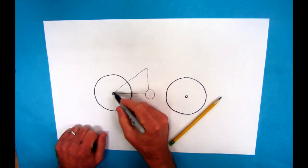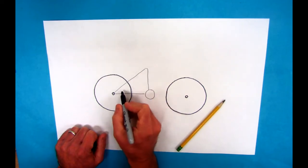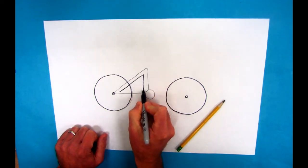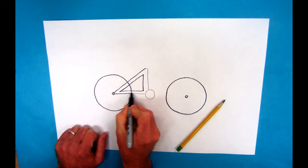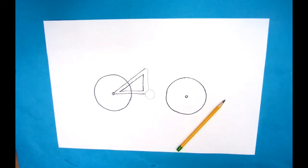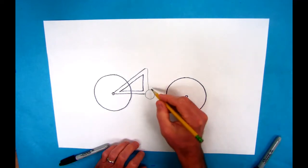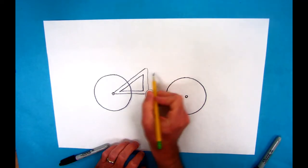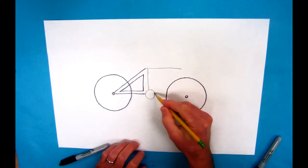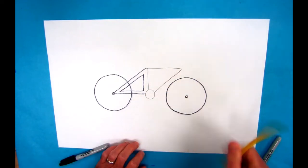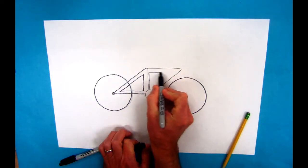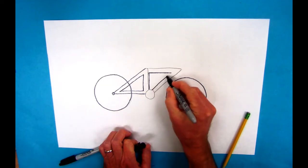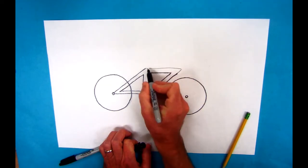Now I'm going to make that have a double thick line so I can color. The other triangle follows this same line except it heads towards the front of the bike. Again, you want to make that a double thick line so you have room for color.